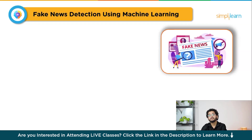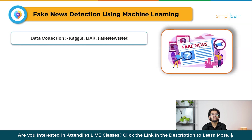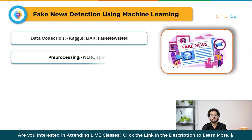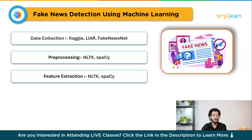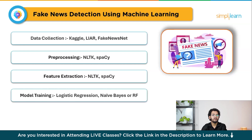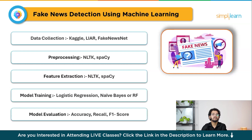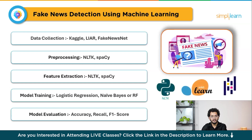This project is a perfect introduction to natural language processing (NLP), as it involves text data manipulation, feature extraction, and supervised learning. It can also be adapted for real-time use on websites or social media platforms to flag suspicious articles. To build this: Step 1 is data collection — use datasets like LIAR or FakeNewsNet that contain labeled real and fake news articles, available on Kaggle. Step 2 is preprocessing — clean the text by removing stop words, punctuation, and special characters; tokenize and stem words using NLTK or spaCy. Step 3 is feature extraction — use TF-IDF or bag of words to convert text into numerical data. Step 4 is model training — train a classifier like logistic regression, Naive Bayes, or random forest. Step 5 is evaluation — evaluate using accuracy, precision, recall, and F1 score. Tools: NLTK, scikit-learn, and pandas. Skills gained: text preprocessing, NLP, and classification models.